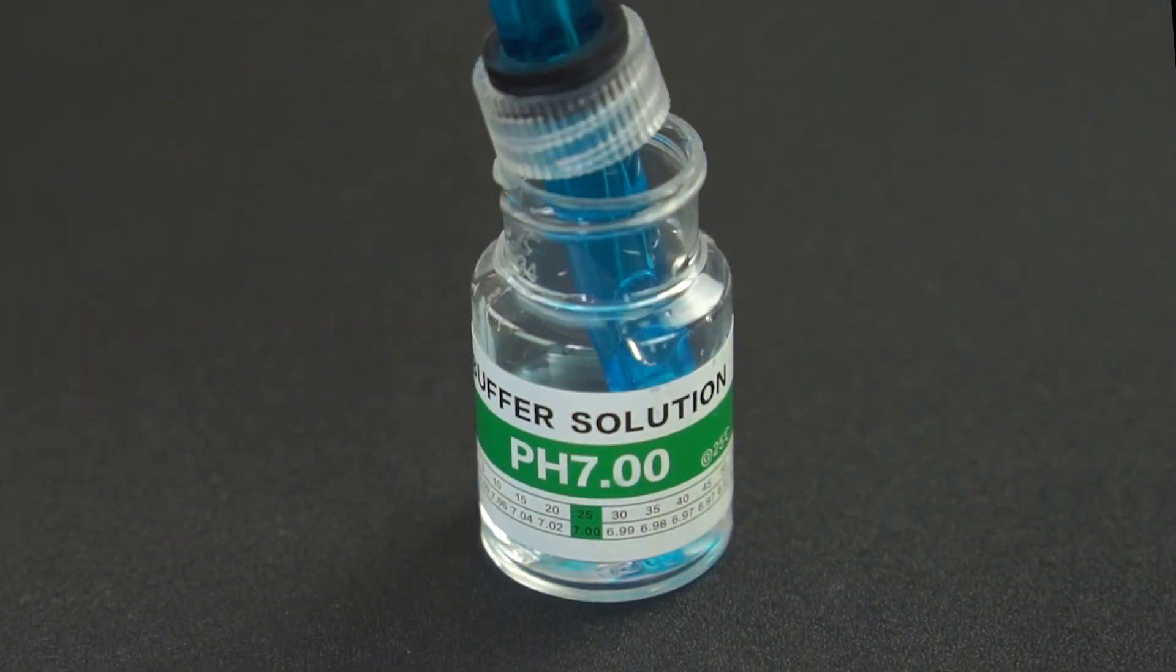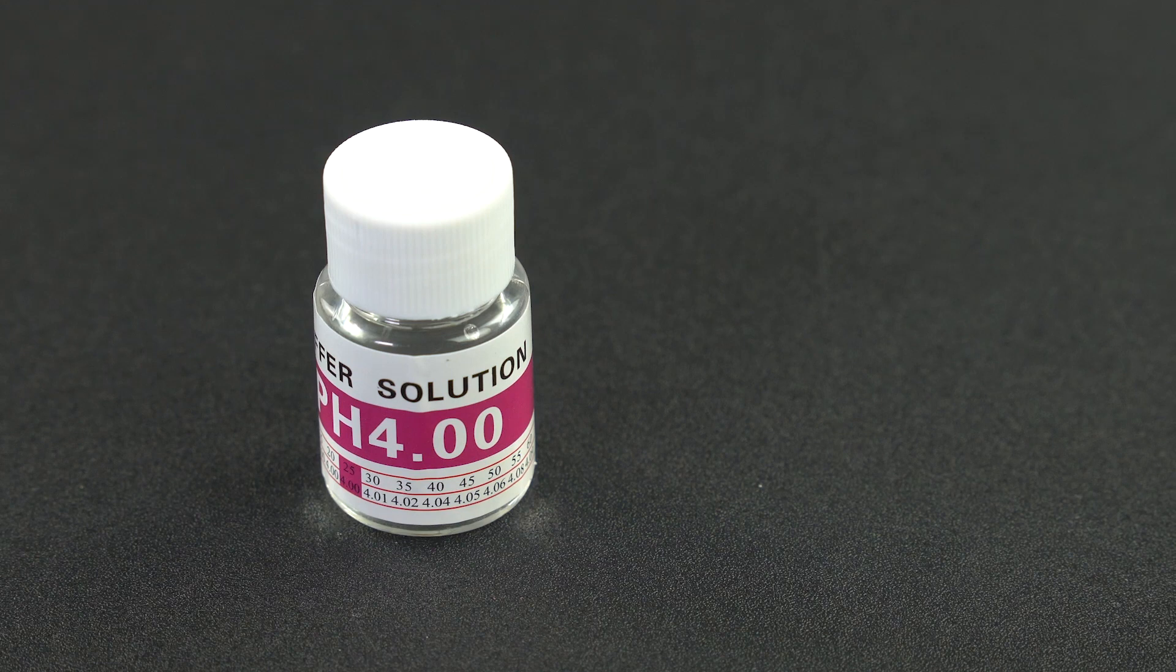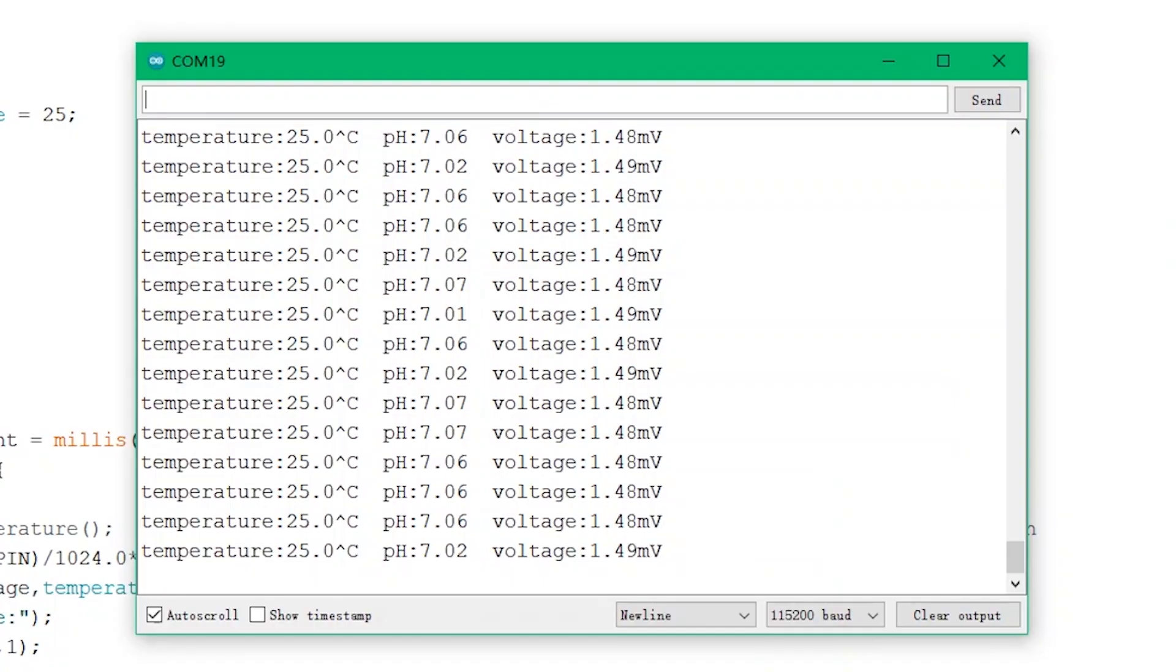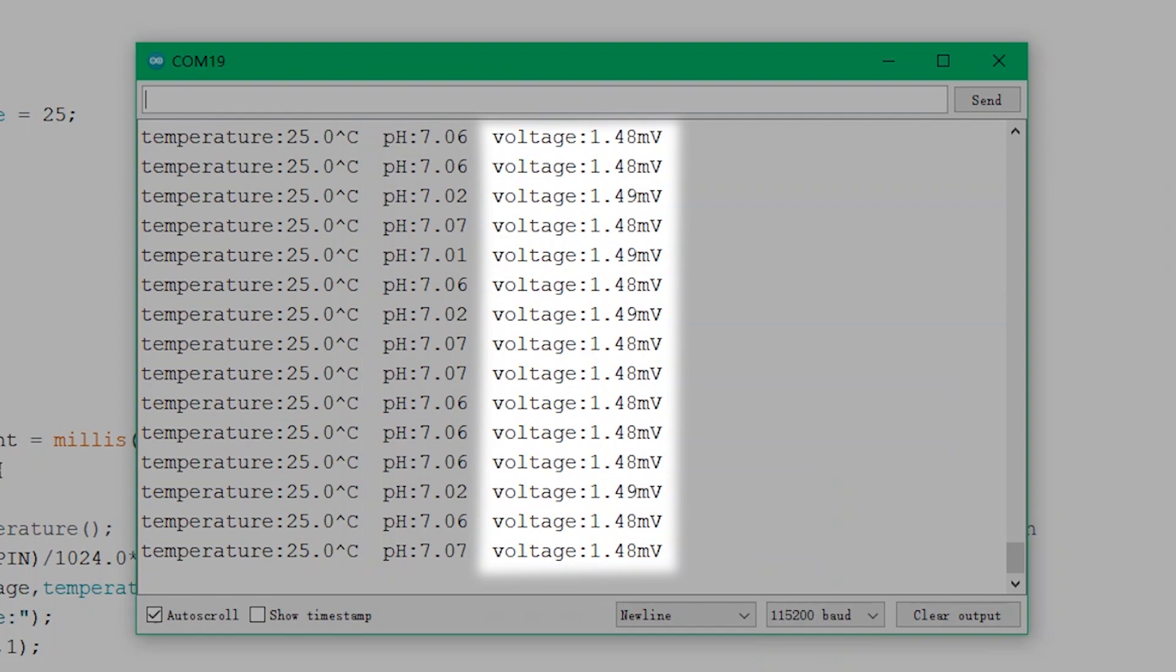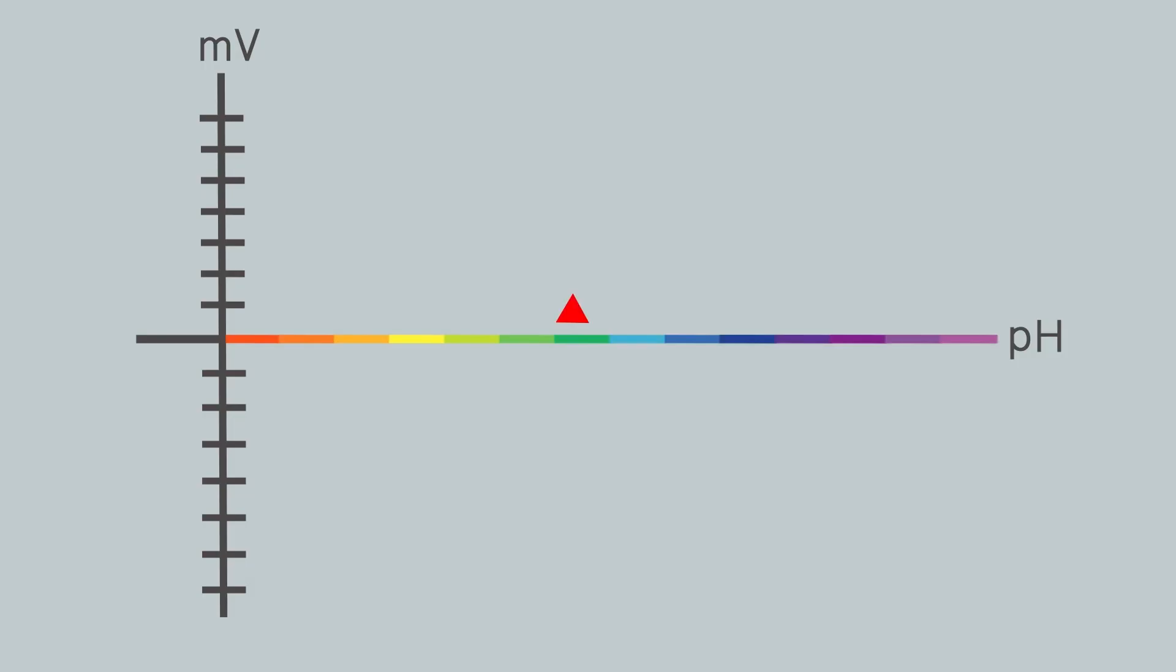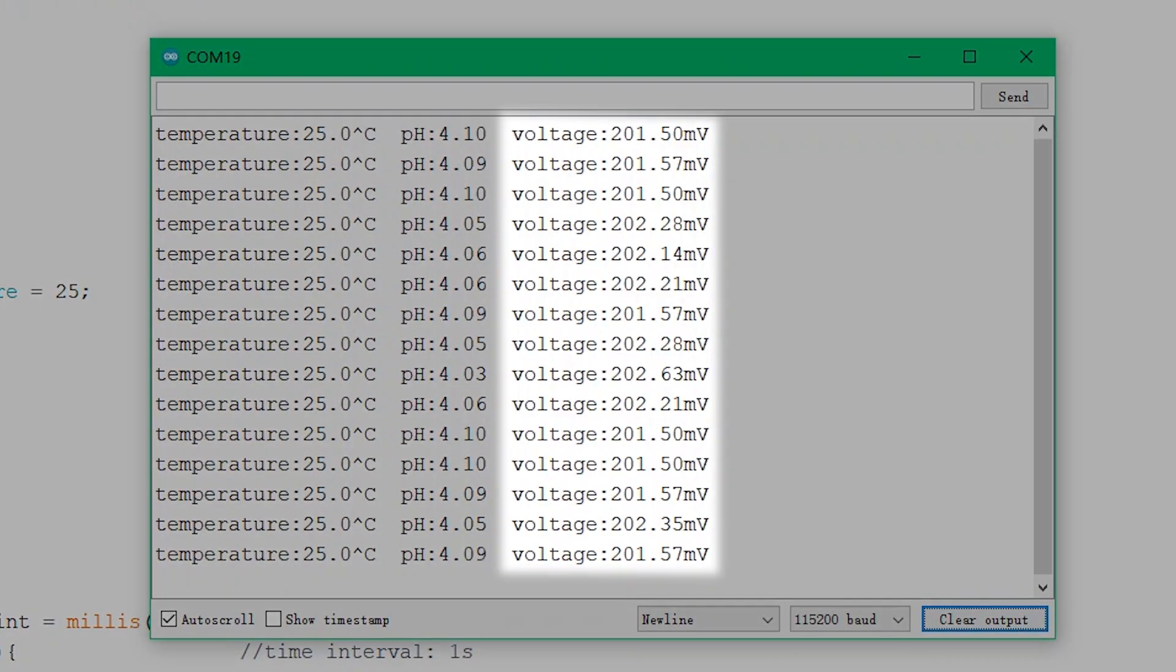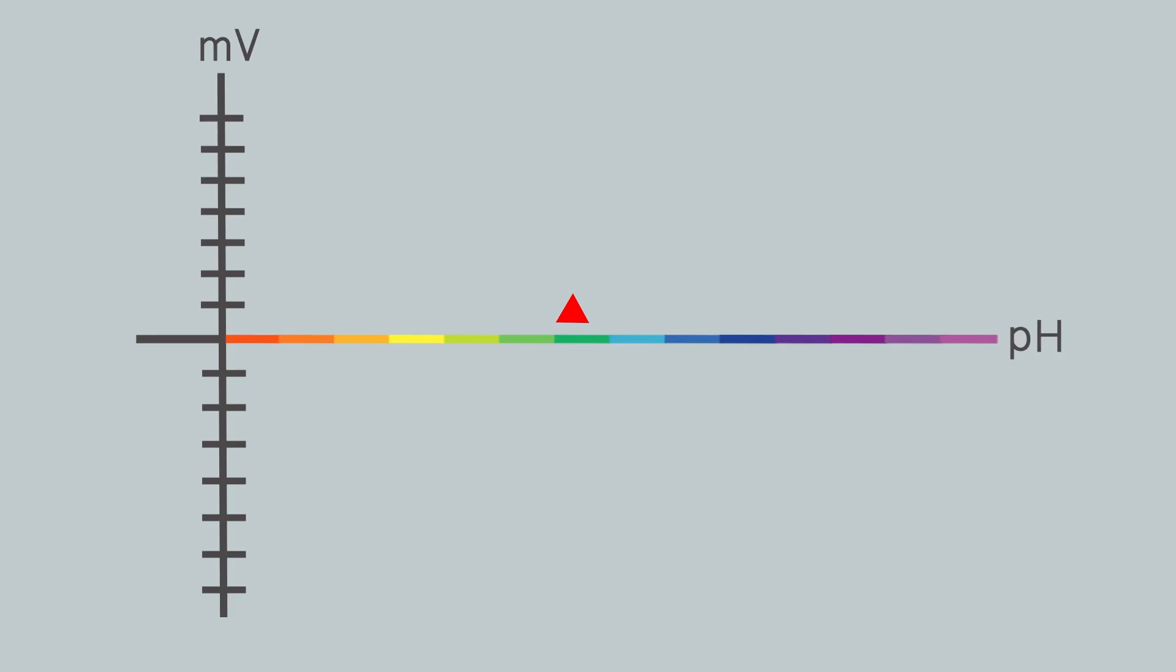Immerse the probe into the proven buffer solutions, for example, the pH 7 and pH 4 standard solutions. Get the voltage reading at pH 7 and mark it in the graph. Get the reading at pH 4 and mark it. Connect the two points with a straight line and extend it. Then, a pH versus millivolt curve is done.